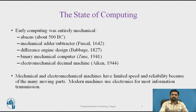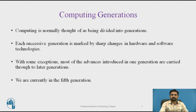Modern machines use electronics for most information transmission. Computing is normally divided into different generations: generation 1, then 1 to 2, 2 to 3, 3 to 4, and 4 to 5. In each generation, both space and speed are improved. Each successive generation is marked by sharp changes in hardware and software technologies, and most advances introduced in one generation are carried through to later generations. We are currently in the fifth generation.